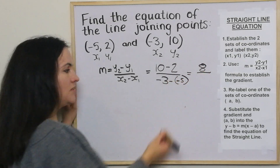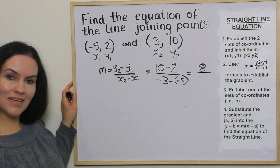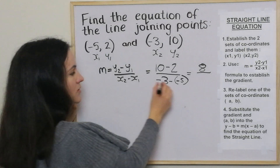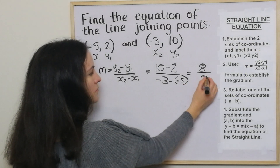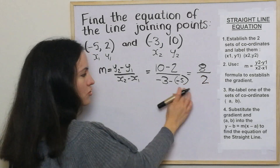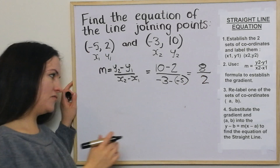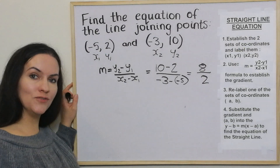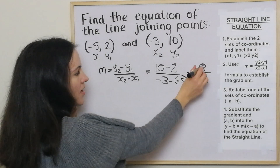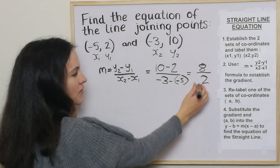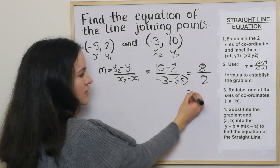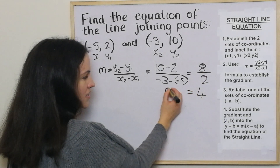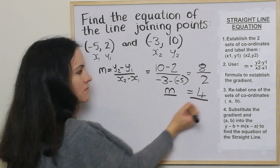We've got negative 3 take away negative 5, which becomes positive 2. If you struggle with that, there's another video about adding and subtracting negative numbers you can have a look at. 8 divided by 2 is 4, so our gradient is 4.